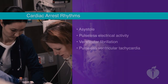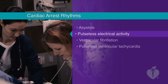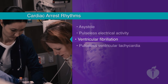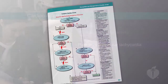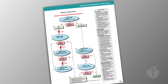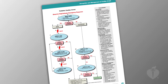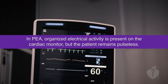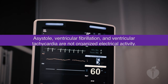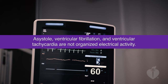Cardiac arrest states include asystole, pulseless electrical activity, ventricular fibrillation, and pulseless ventricular tachycardia, including torsade de pointe. For all these cardiac arrest states, CPR should be performed and emergency medications should be provided in accordance with the pediatric cardiac arrest algorithm. In pulseless electrical activity, or PEA, organized electrical activity is present on the cardiac monitor but the patient remains pulseless. Asystole, ventricular fibrillation, and ventricular tachycardia are not considered organized electrical activity.